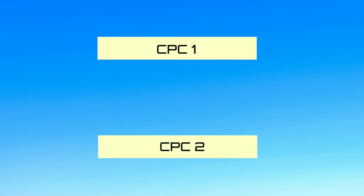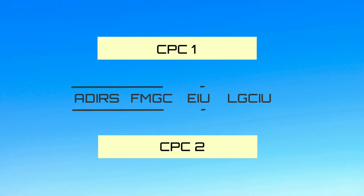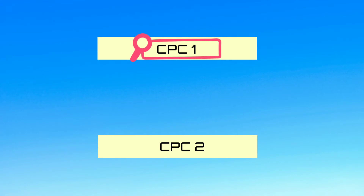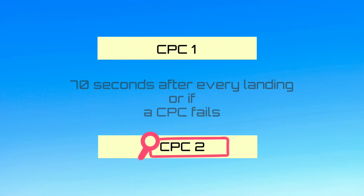Now let us look at the operations of these components. Firstly, the cabin pressure controllers. Two identical, independent, digital controllers automatically control the system by maintaining the proper cabin pressure. They receive signals from the ADIRS, FMGC, the engine interface unit, and the landing gear control interface unit. The controllers also generate signals for the ECAM. In automatic mode, only one controller is active at any time; the other is on standby. The system does an automatic switchover between CPC1 and CPC2, 70 seconds after a landing, or if a CPC fails.